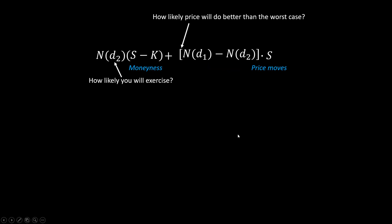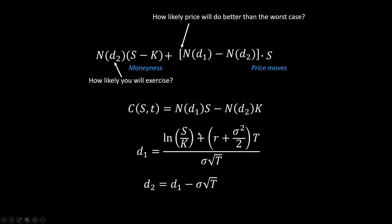If you rearrange the formula, you will get the Black-Scholes formula. Don't forget the time value of money.